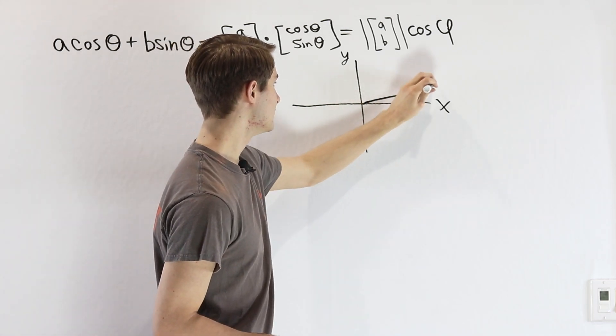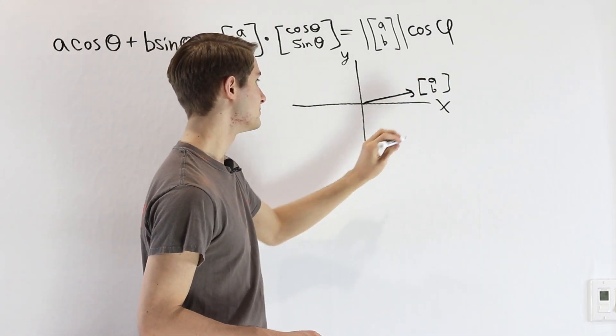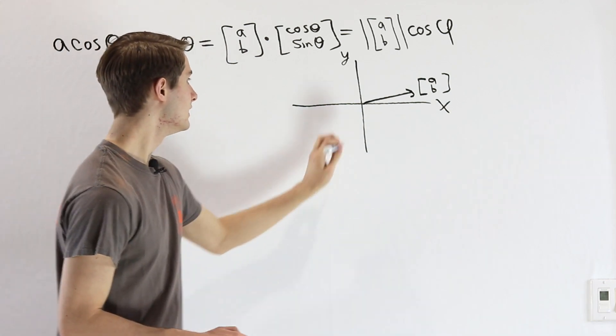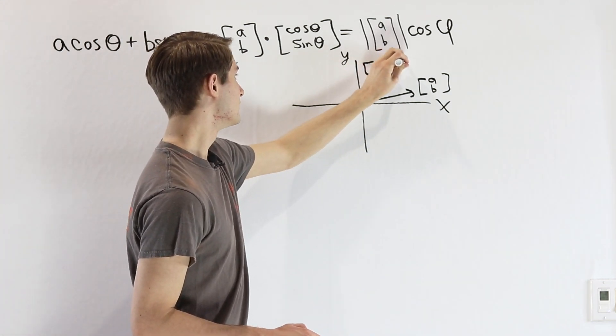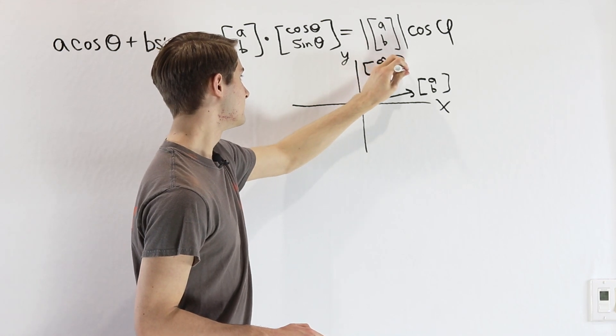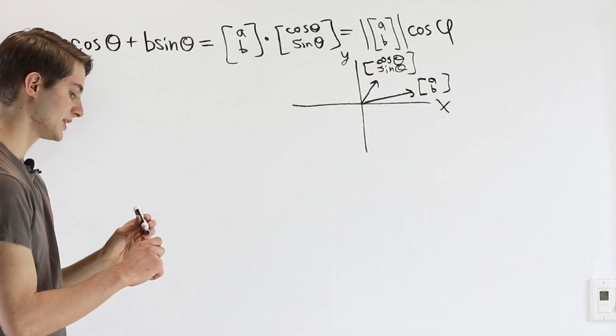We can have our first vector here [A, B], which might have any magnitude. And then we have our unit vector [cos θ, sin θ], going off in another direction.